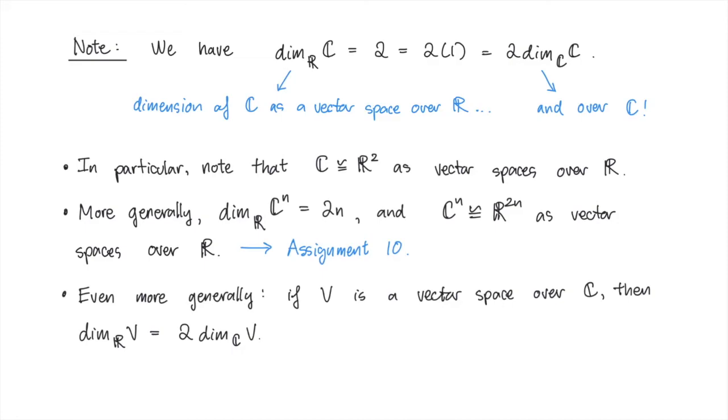Even more generally, if V is a finite dimensional vector space over C, then it's also a vector space over R, and its dimension over R is twice the dimension over C. If you finish assignment 10 early, see if you can prove this for yourself.